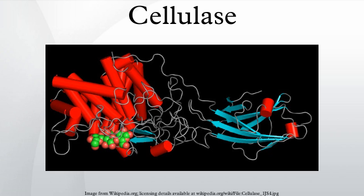Several different kinds of cellulases are known, which differ structurally and mechanistically. Synonyms, derivatives, and specific enzymes associated with the name cellulase include endo-1,4-beta-D-glucanase, beta-D-glucan-4-glucanohydrolase, carboxymethylcellulase, and avicelase.